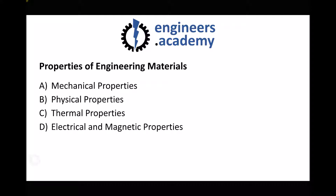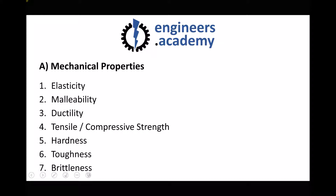Let's begin with our mechanical properties. The seven mechanical properties we're going to look at are: elasticity, malleability, ductility, tensile and compressive strength, hardness, toughness, and brittleness. We'll take each one in turn and clarify what each of these different material properties are.